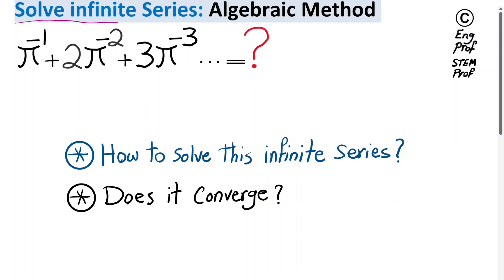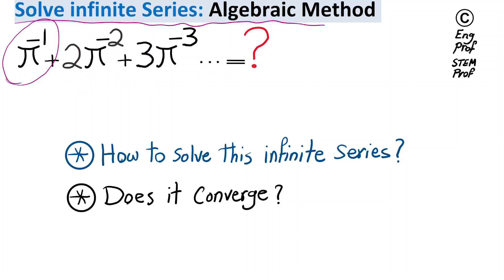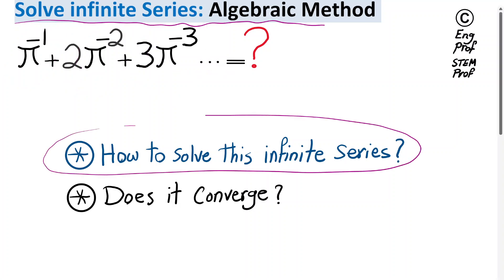For the infinite series shown in this example, in the form of 1 over π plus 2 times 1 over π squared plus 3 times 1 over π cubed, up to infinity, we want to see if there is a quick way to solve it. Is there a closed-form formula for this? Does it converge?